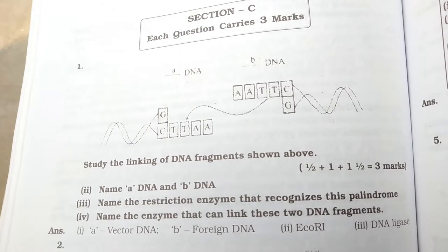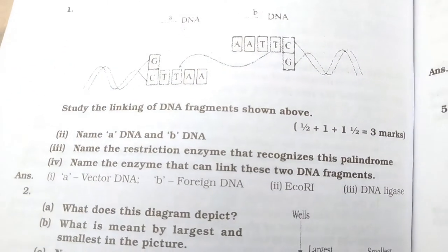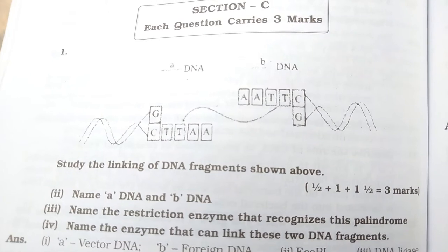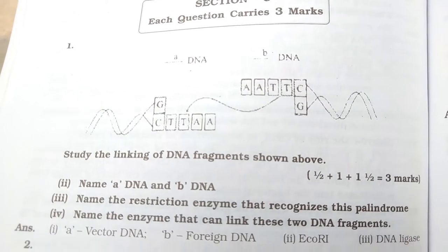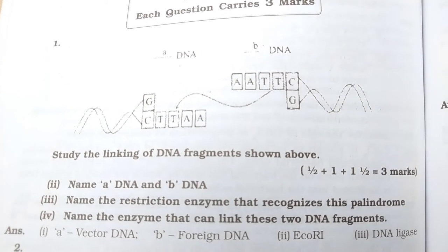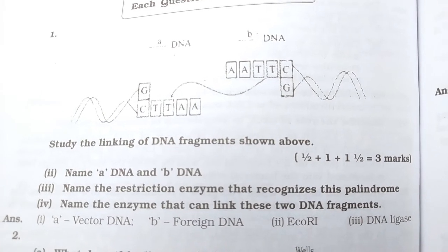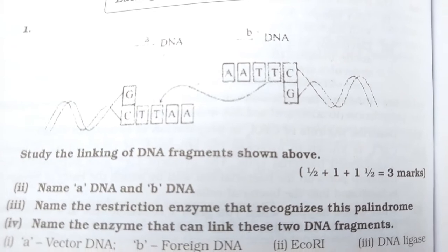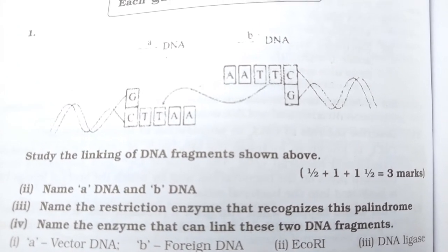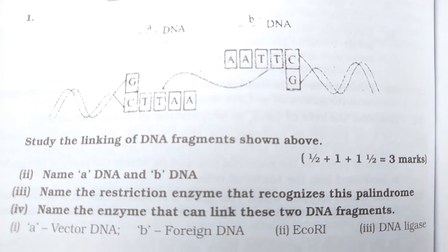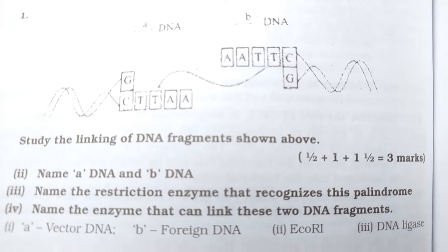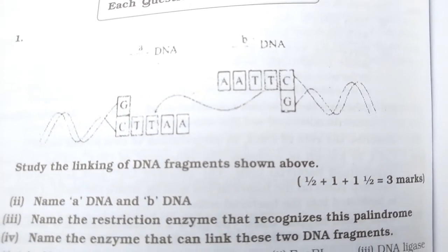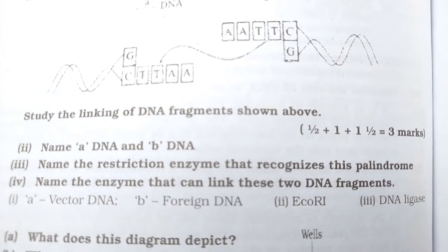The very first question shows a diagram. Study the linking of DNA fragments shown. Name DNA A and DNA B. Name the restriction enzyme that recognizes this palindrome, and name the enzyme that can link these two DNA fragments. The answers are also visible.